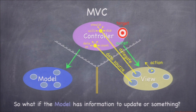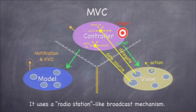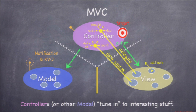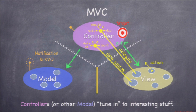We handle model-to-controller communication using a radio station model. The model broadcasts information to anyone who's interested, and the mechanisms for doing this in iOS are called notification and key-value observing, or KVO. The model says 'anytime something changes, I'll broadcast on my radio station,' and the controller simply tunes into that radio station. When it finds out something changed, it communicates back to the model to get that data.